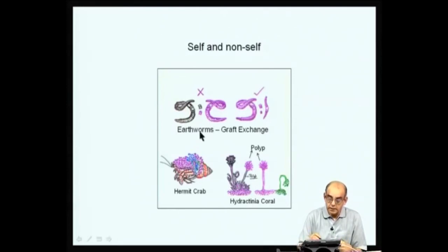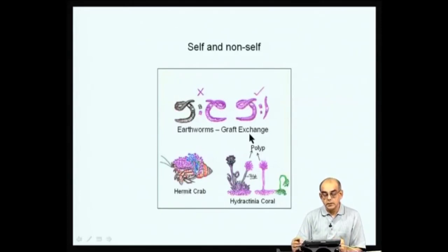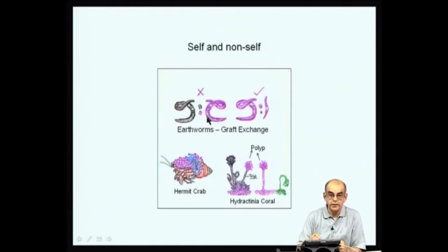Earthworms also exhibit this phenomenon of distinction between self and non-self. If you take a piece of skin from an earthworm from one locality and graft it onto another one from a different locality — shown here in red — you will see that the red earthworm actually rejects the black one. However, if you have a skin graft taken from the same locality earthworms, then there is actually acceptance.